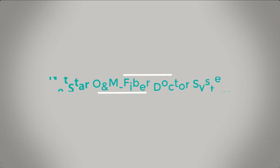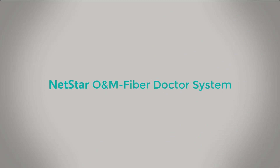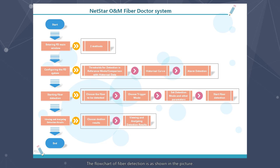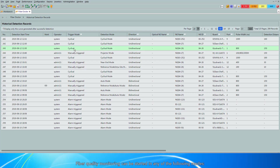This video introduces the operations of the FiberDoctor system. The flowchart of fiber detection is as shown in the picture. Fiber quality monitoring can be started in any of the following modes: manually, alarm triggered, and periodically.